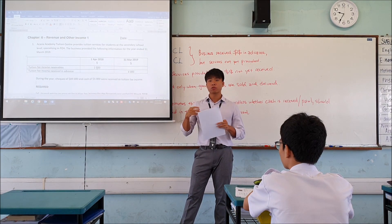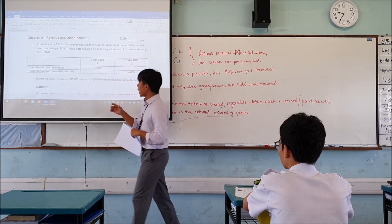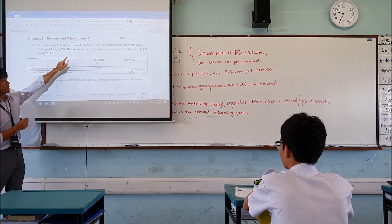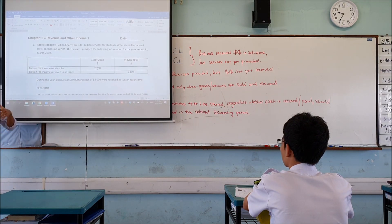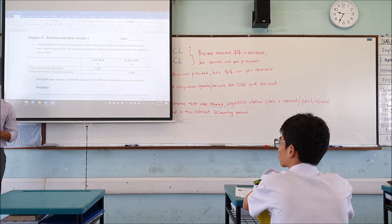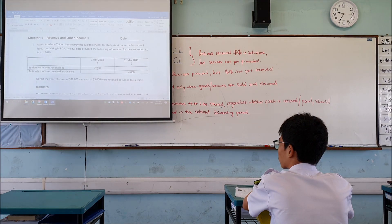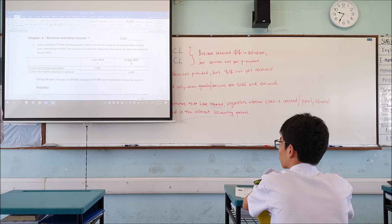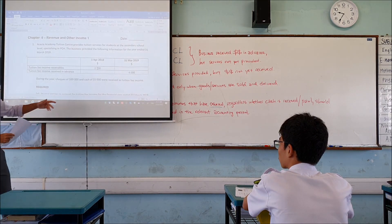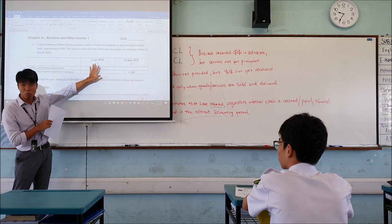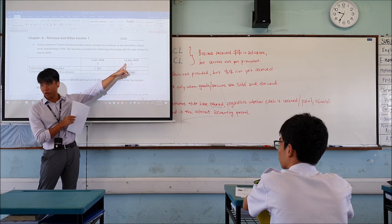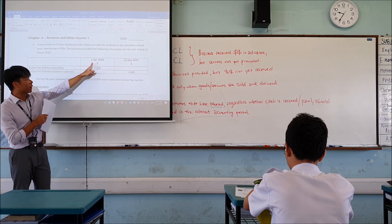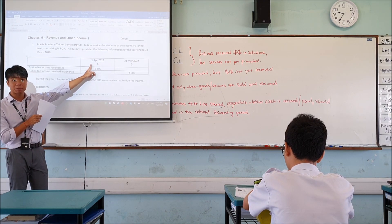The first thing you have to know when you do this type of question is this: every question is going to start by telling you what the financial year end is. The financial year end is 31st March 2019. Why is this important? Because if they tell you the financial year end is 31st March, you need to know what is the financial start of the year. If your financial year ends on 31st March 2019, it means that your financial year started on 1st April 2018.